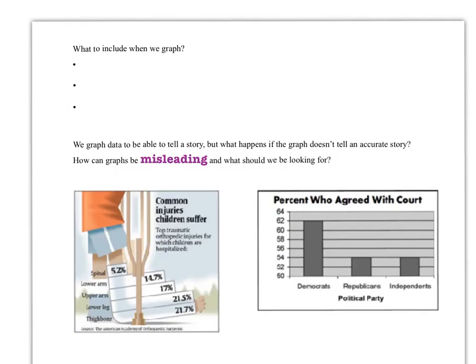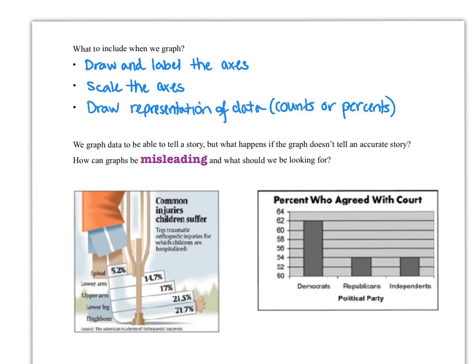Important reminder what to include when we graph. First of all, we always want to draw and label the axes. Next, we always want to scale the axes. So if we're dealing with a categorical bar graph, for example, the scale might just be labeling what the bars are along with putting in the percents or the counts appropriate. And last of all, we're going to actually draw in the representation of the data. In addition to all of this, it doesn't hurt to title. So just remember, you can always title your graphs as well.